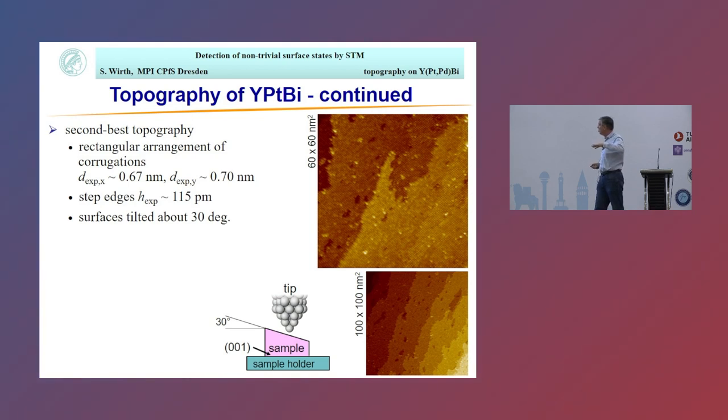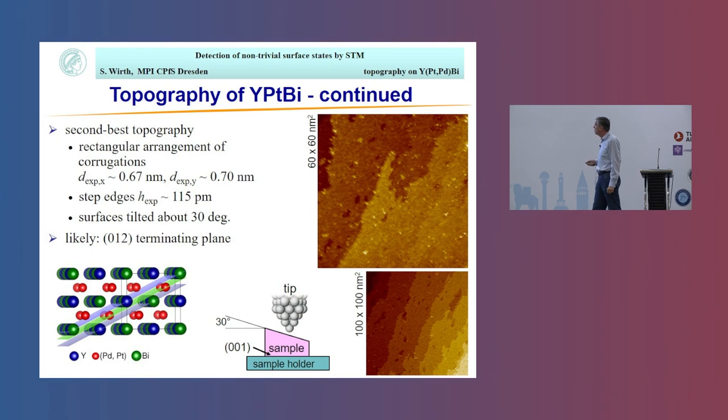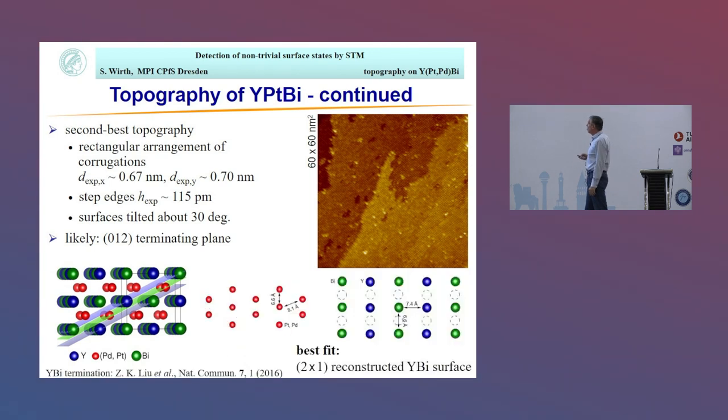We also know, because whenever we put our samples into the STM, we do LEED beforehand to note the orientation. In this case we know we have a 001 surface attached to the sample holder, and while scanning we notice that the surface is actually inclined by about 30 degrees. This gives us a good hint of what surface we're actually looking at. We think it's the 012 terminating plane because in this case you expect something like 29 degrees for the surface inclination. Also, if you look at the distances between the corrugations, it becomes clear we very likely don't have platinum here. It seems to be that we have a bismuth-yttrium terminated surface plane, and that's also been seen by others in ARPES measurements.